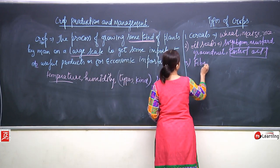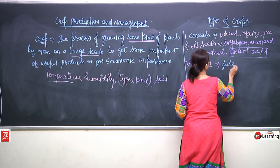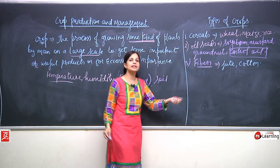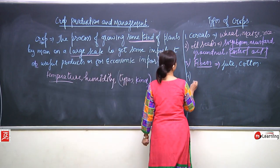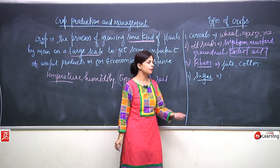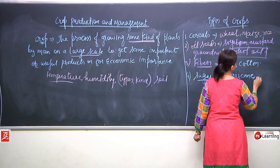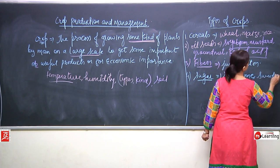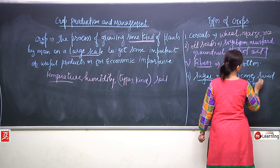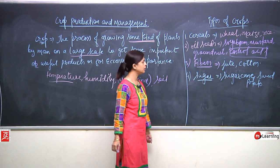Next, fibres. Examples are jute and cotton — these come under fibre crops. Then sugar crops — from where do we get sugar? Sugarcane is responsible. Even sweet potato can be related to sugar crops.